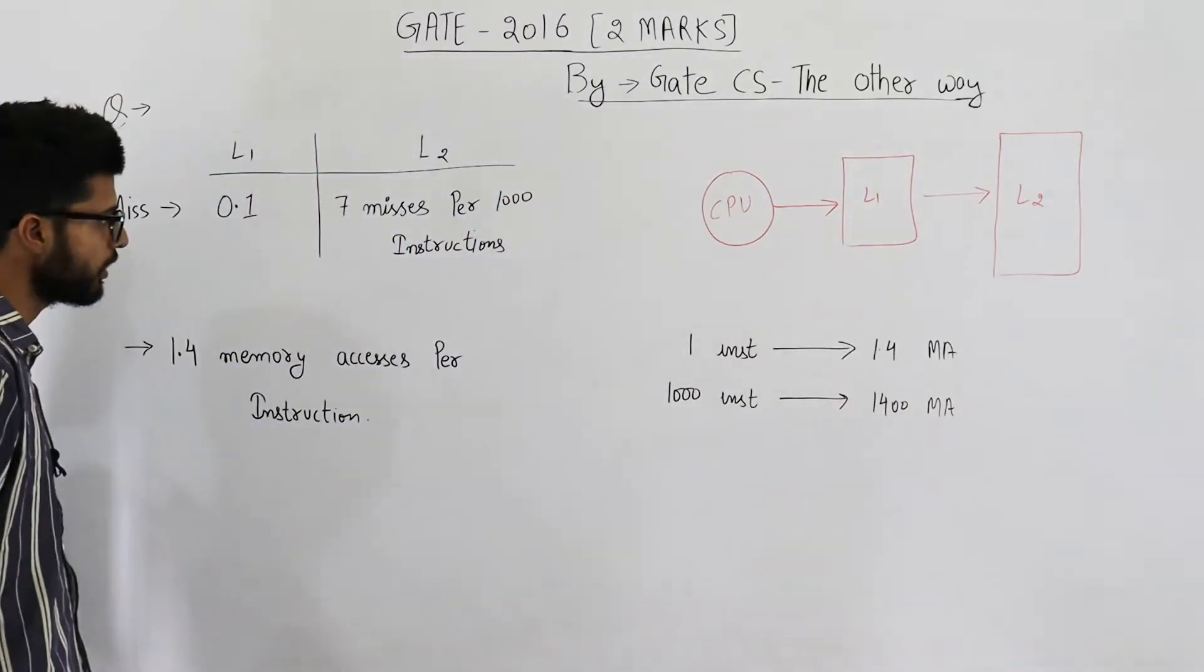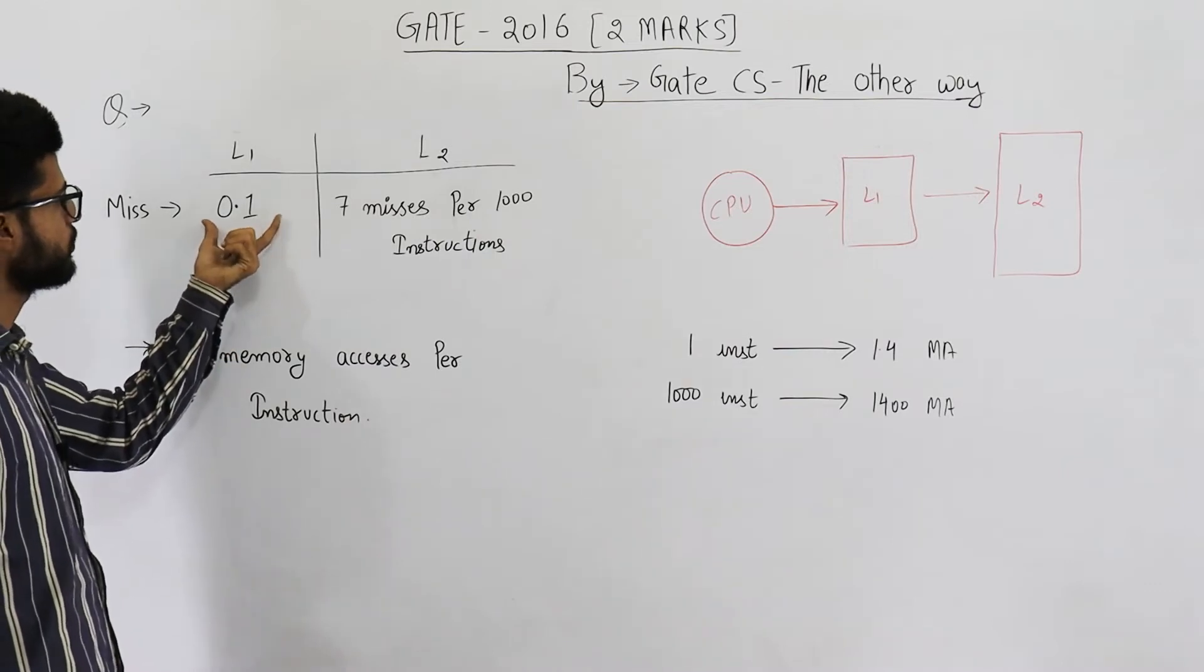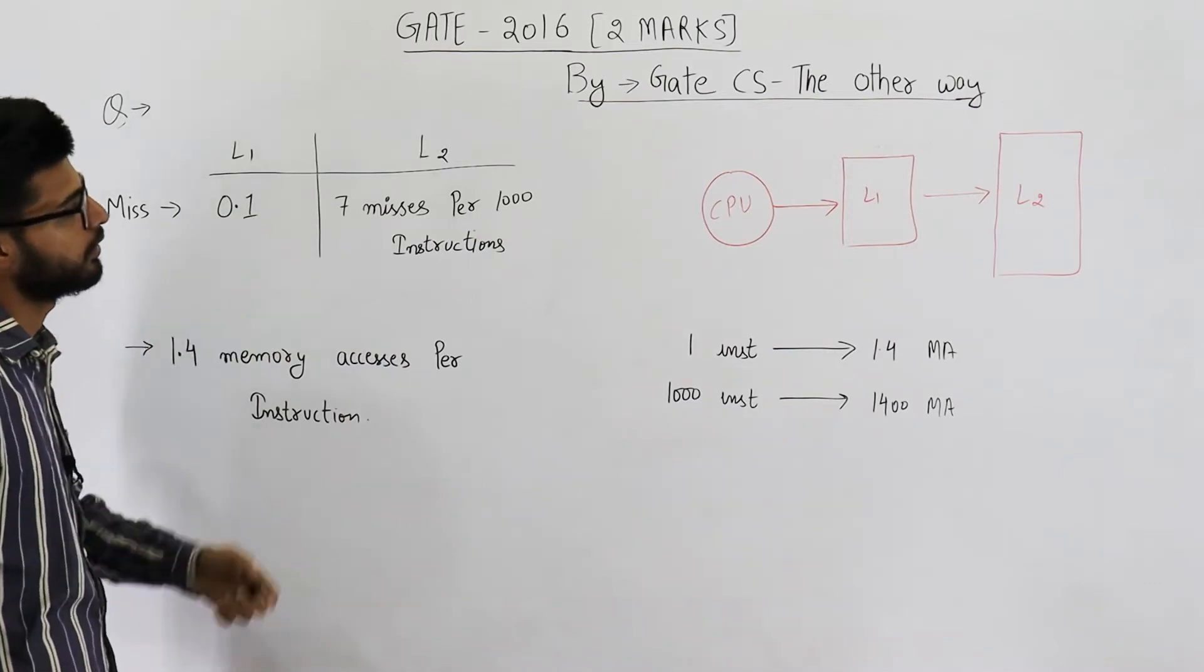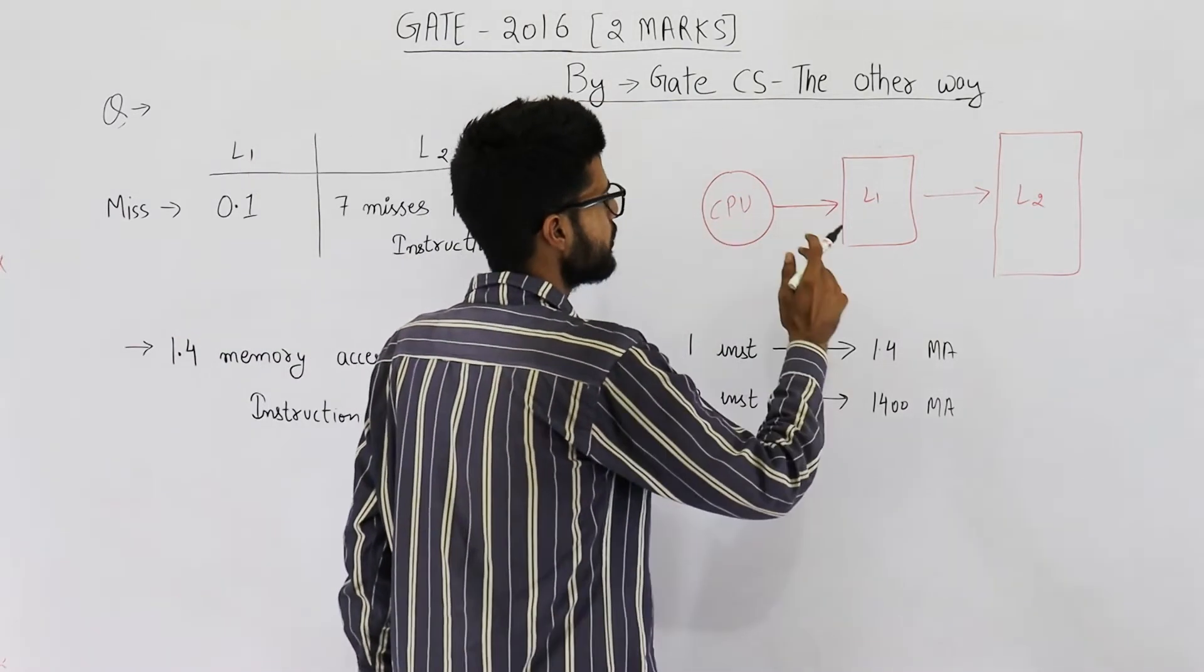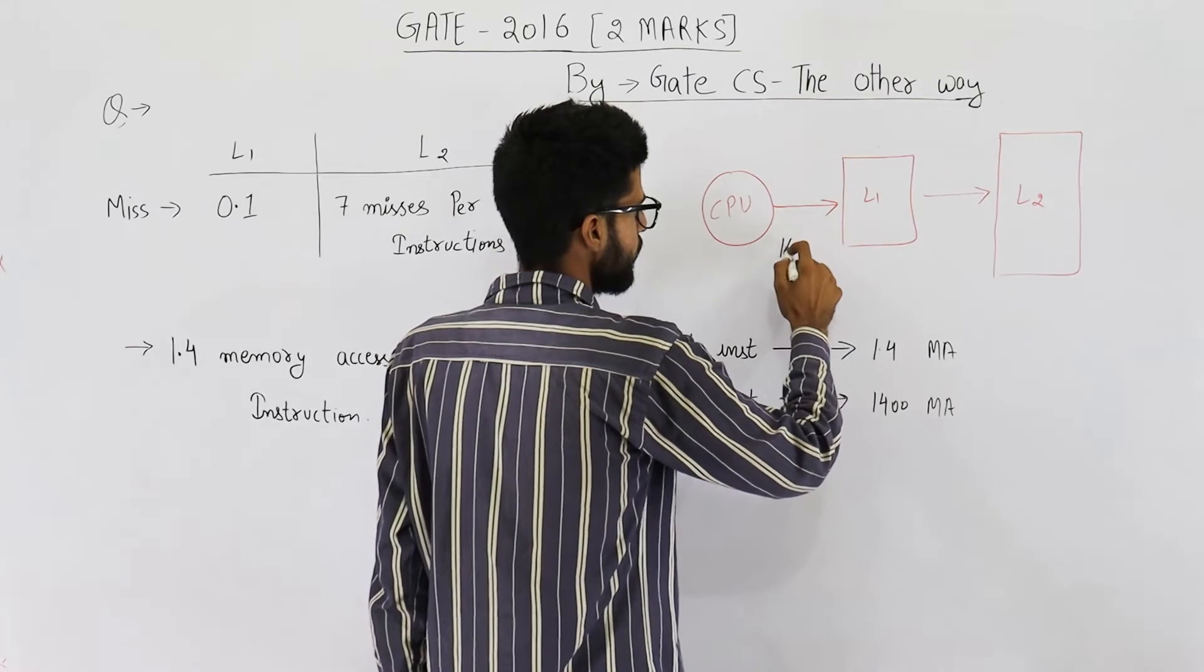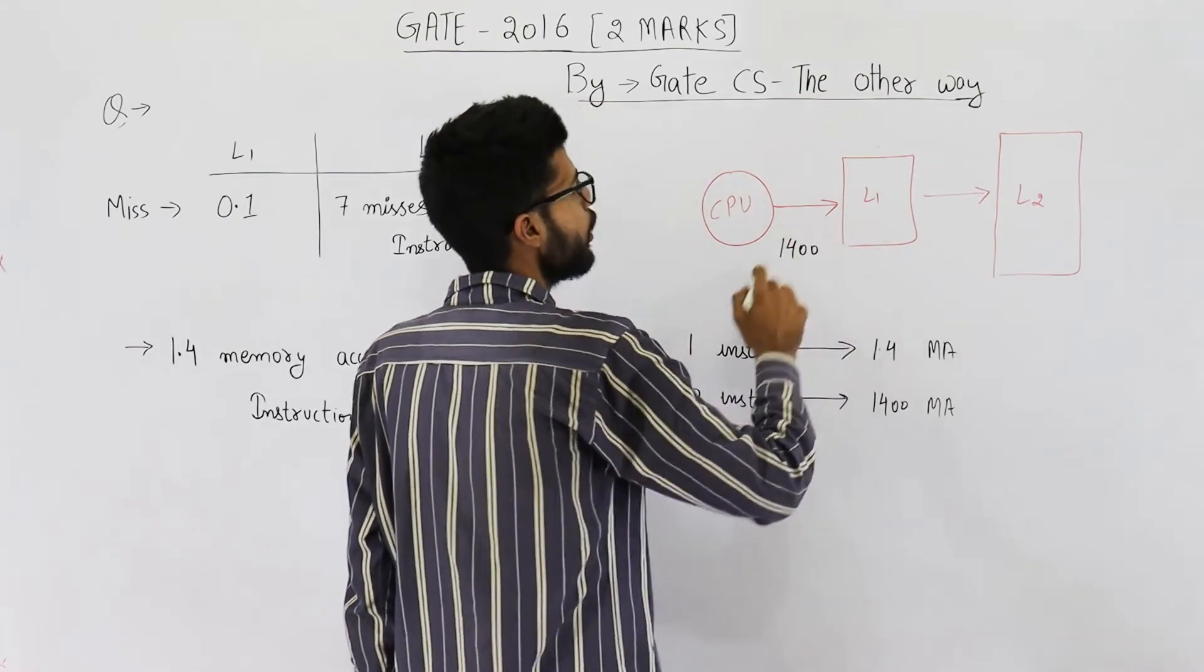Look, L1 its miss rate is 0.1. That means if CPU asks for a word 1400 times from L1...